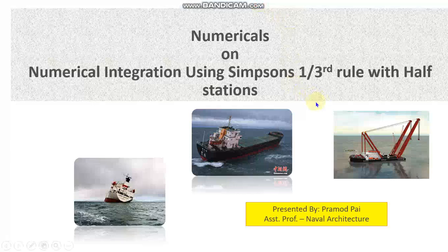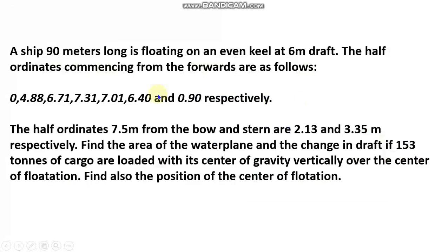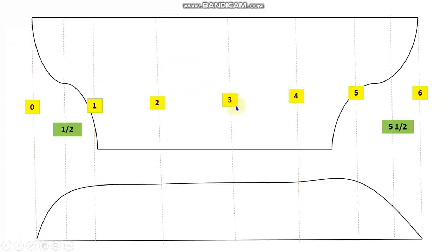Hello and welcome to this video where we will be discussing the solution of a numerical on the topic of Simpson's one-third rule with half stations. We have already discussed in the last video the question — we have a vessel, all the data is given, and I have drawn a representative figure to show how these half stations are taken and how station numbering is done. Please remember: stations must be taken in reverse order — 0, 1, 2, 3, 4, 5, 6 — with half stations at the ends. The value of the answer will not change either way.